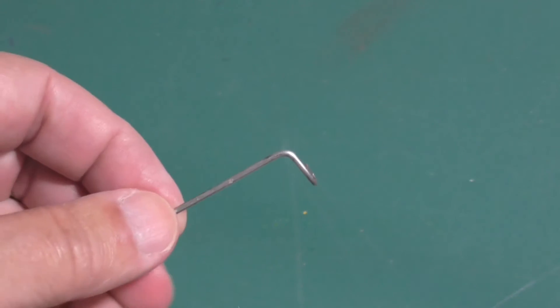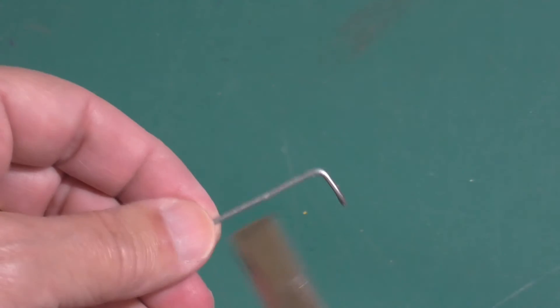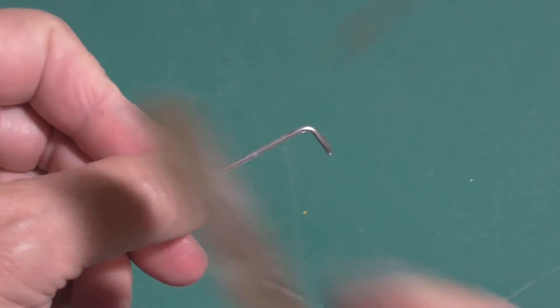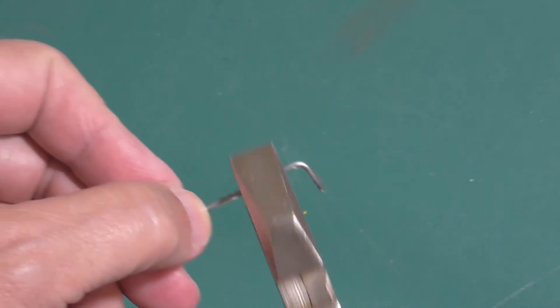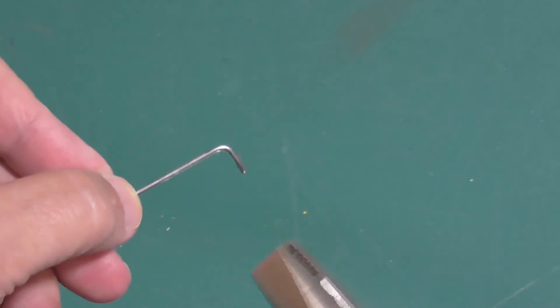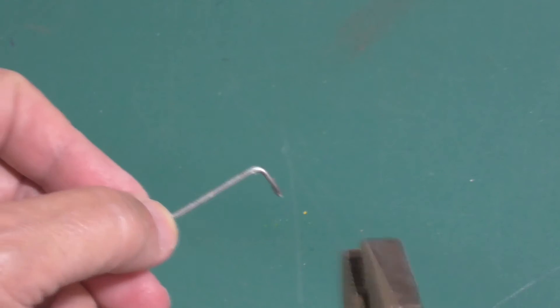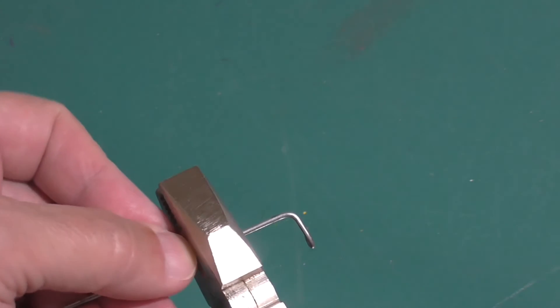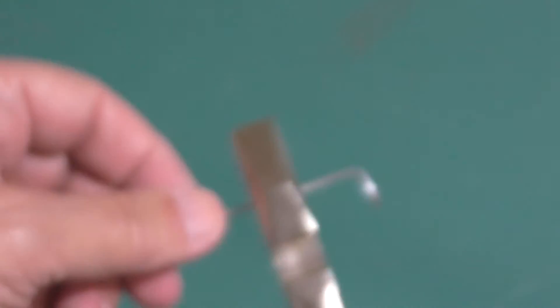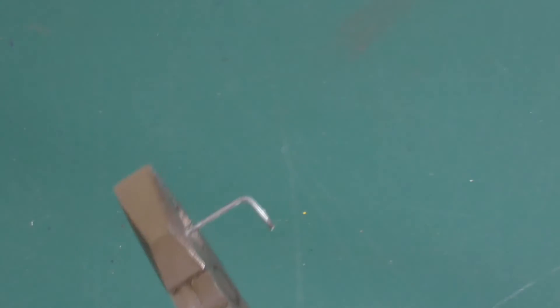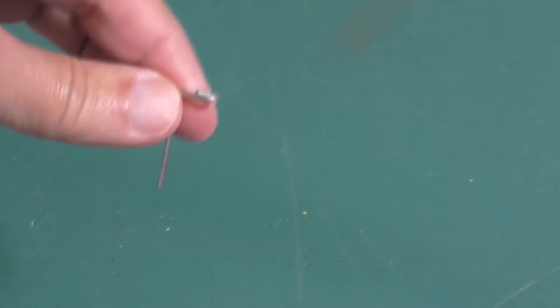Estimate about an inch and a half down from the loop and using your heavy wire cutters, clip the section free. This will be your rudder post.